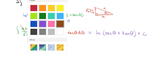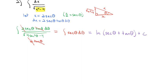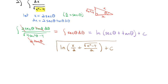We already know the integral of secant theta is the natural log of the absolute value of secant theta plus tangent theta, plus C. Back-substituting using our triangle: secant theta equals x over 2 and tangent theta equals the square root of x squared minus 4 over 2. So our final antiderivative for the integral of dx over the square root of x squared minus 4 is the natural log of the absolute value of x over 2 plus the square root of x squared minus 4 over 2, plus C.